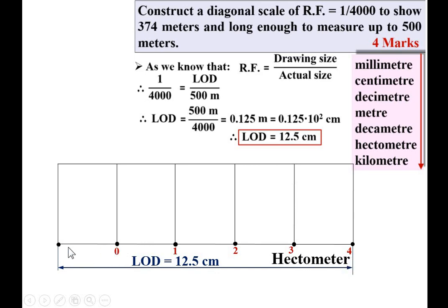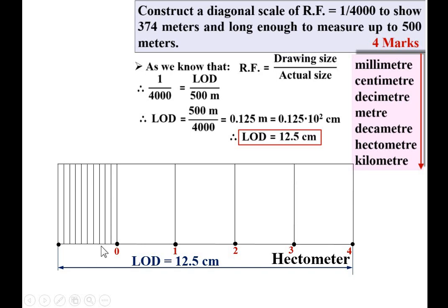Divide the first division into 10 equal parts. Number them 0 through 10 — if space is limited, just mark 0, 5, and 10. These 10 equal divisions of 1 hectometer each represent 1 decameter. Label this accordingly: each division represents a decameter.